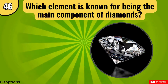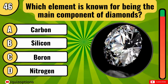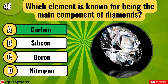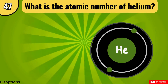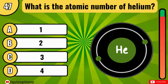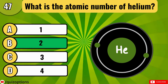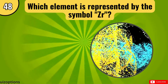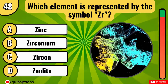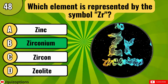Which element is known for being the main component of diamonds? Carbon is the main component of diamonds. What is the atomic number of helium? Which element is represented by the symbol Zr? The right answer is option B, zirconium.